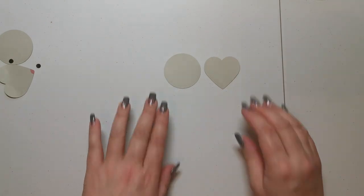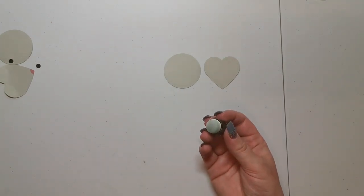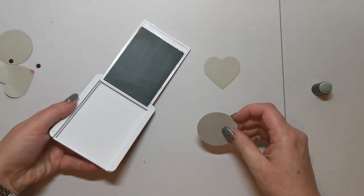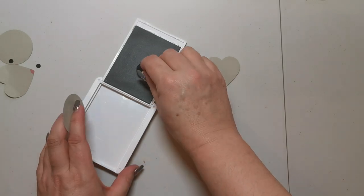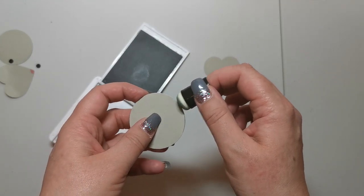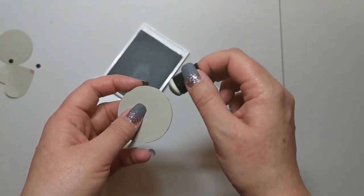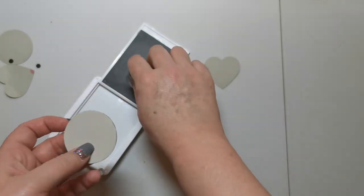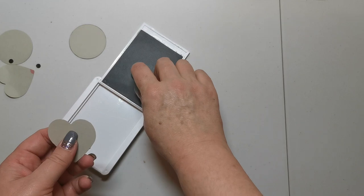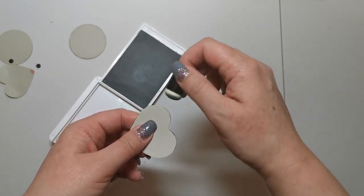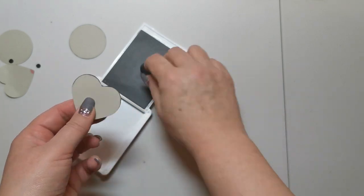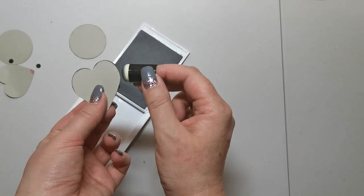Now before I do anything else with this, I want to get a sponge dauber and the smoky slate ink, and I'll show you what I'm going to do. It just gives it a little bit of texture, a little bit of dimension. Let's just load up my dauber, and then I'm just going to just on the outside there, just the very, very outside, and just go all the way around. And then you're going to do the same with the heart shape as well, especially around the ears. That's where I really want to get this.